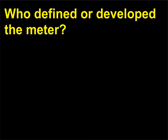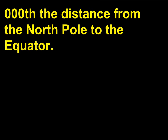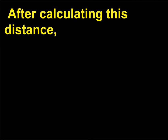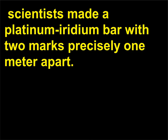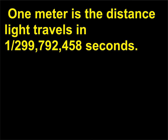Who defined or developed the meter? In 1798, French scientists determined that the meter would be measured as 1/10,000,000th the distance from the north pole to the equator. After calculating this distance, scientists made a platinum-iridium bar with two marks precisely one meter apart. This standard was used until 1960. Today the meter is defined using the second and the speed of light: one meter is the distance light travels in 1/299,792,458 seconds.